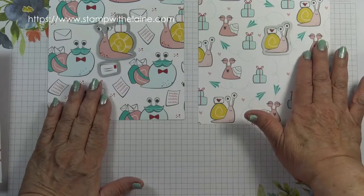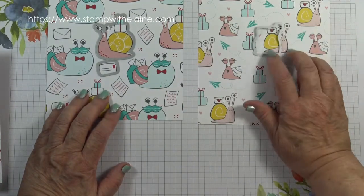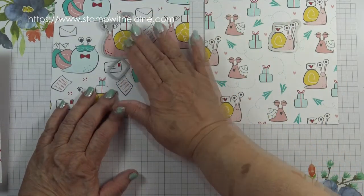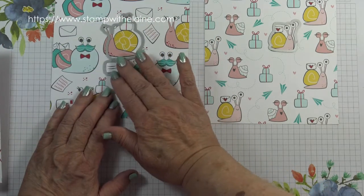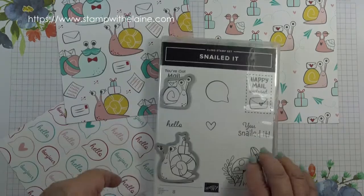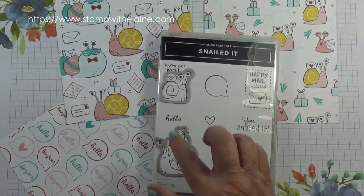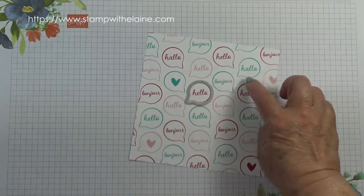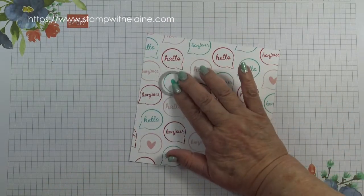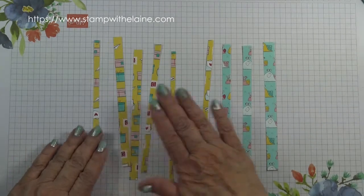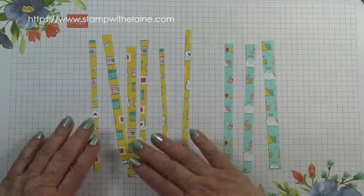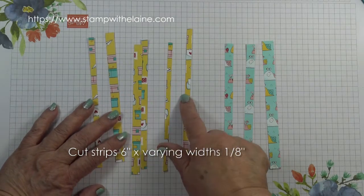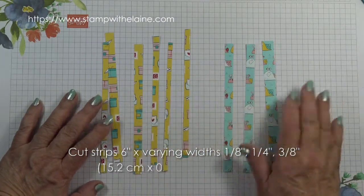From this patterned designer series paper there is a die that will cut out this snail. On this piece there is this die that will cut out the snail facing to the left. Also the letters from here and these dies will also cut out the stamped images. From this sheet this speech bubble will cut out bubbles from here in whatever direction it's pointing and from these two sheets I cut out strips that were six inches by a different width so they range from an eighth of an inch to a quarter inch to half an inch to three eighths inches.